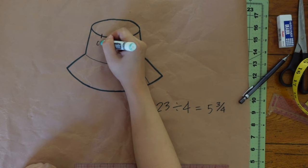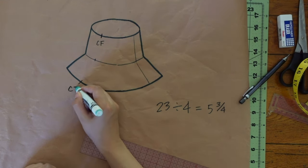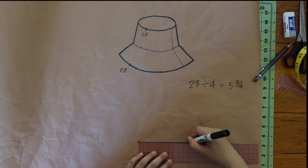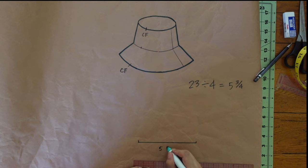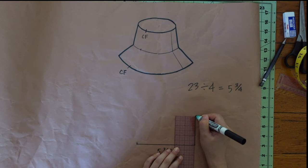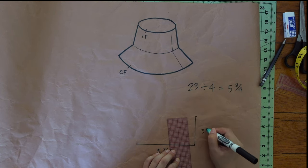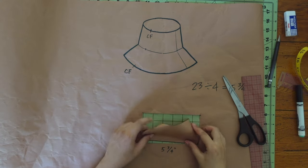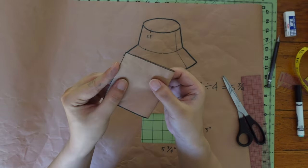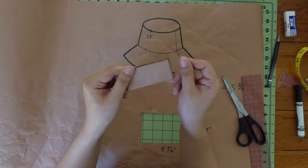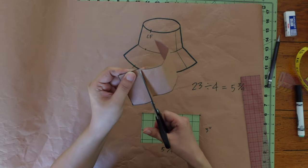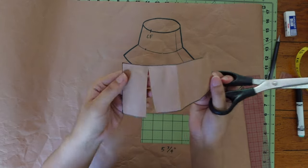The hat has side seams and center front is going to be on fold. I'm going to draft this quarter section of the brim first. Draw a line that is 5 and 3 quarters of an inch long. Then draw another line 3 inches long perpendicular to the first line. Then draw a rectangle. Then fold the rectangle into 4. Cut the folded line close to the edge but not cutting through it.